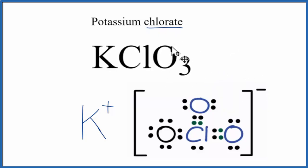When you write the Lewis structure for these ionic compounds, we put the brackets here to show that the potassium lost an electron to the chlorate to form the chlorate ion.